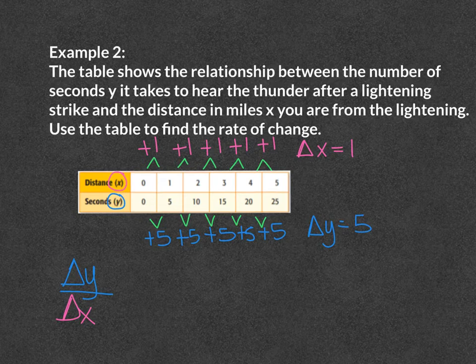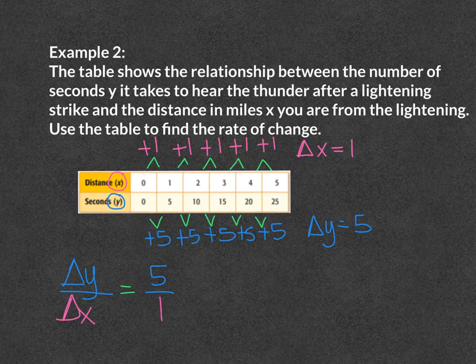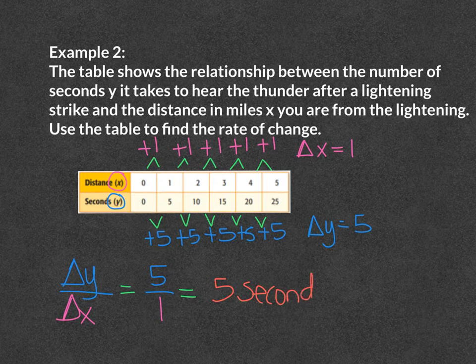Now I am going to find the rate of change. It is the change in y over the change in x. Our change in y was 5 and our change in x was 1. So 5 divided by 1 equals 5. That would be 5 seconds per mile, and that is my rate of change.